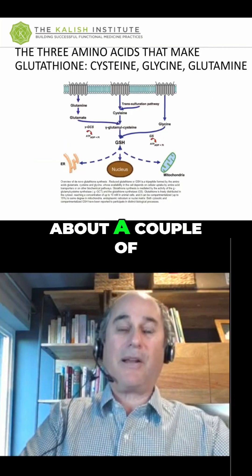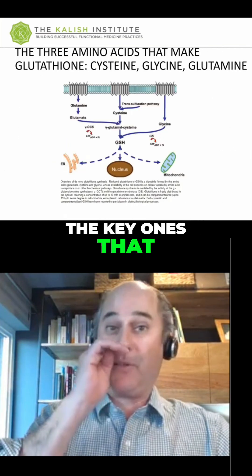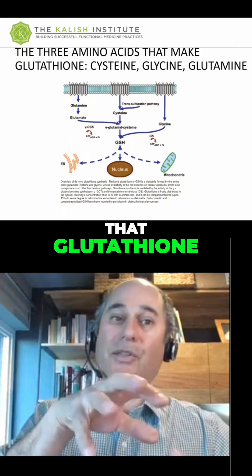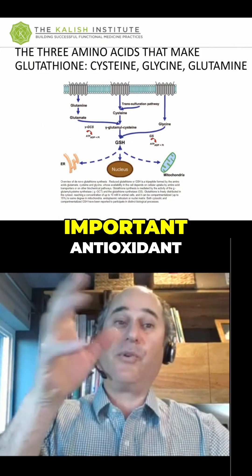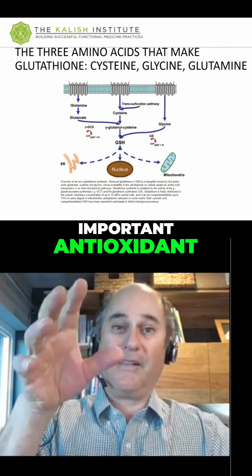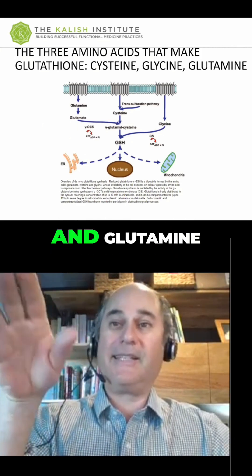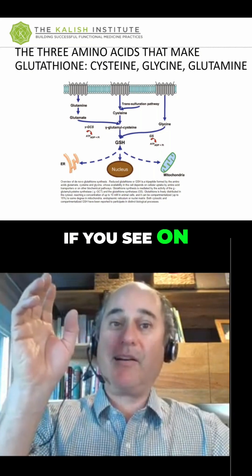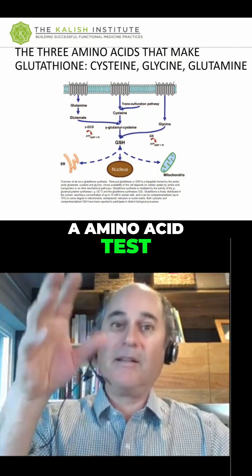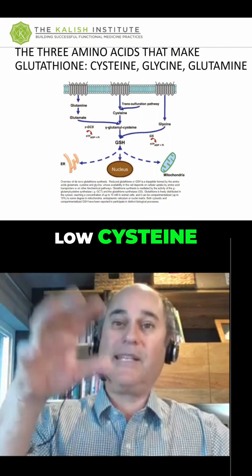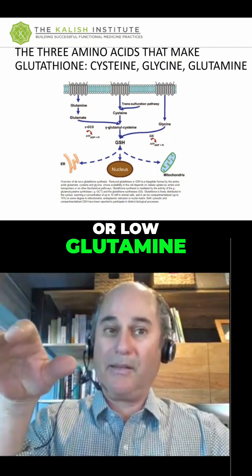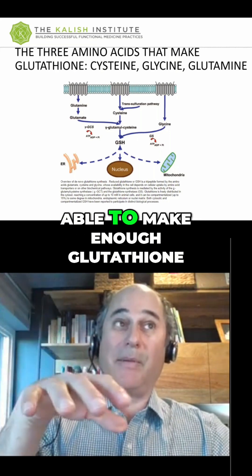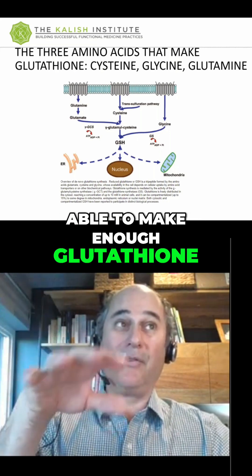I'm going to talk about a couple of the key ones that you just have to memorize. Glutathione, which is the most important antioxidant, is made from cysteine, glycine, and glutamine. So if you see on an amino acid test low cysteine, low glycine, or low glutamine, you should be concerned that they might not be able to make enough glutathione.